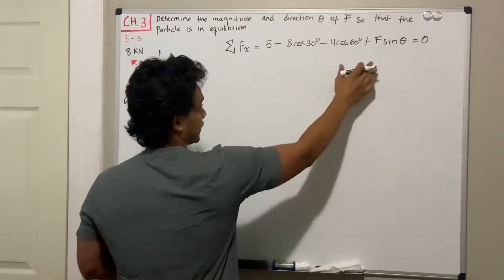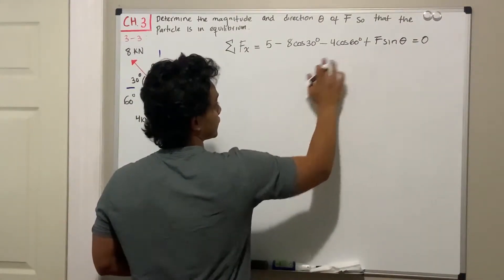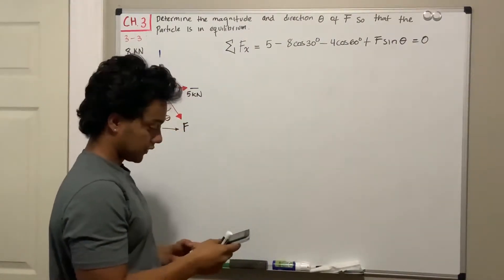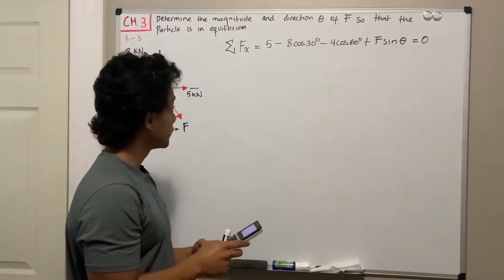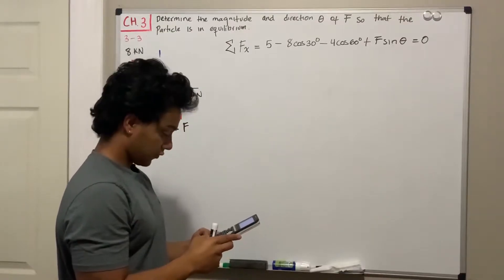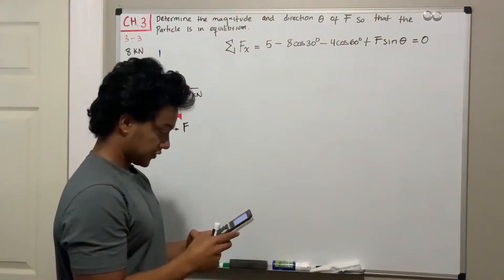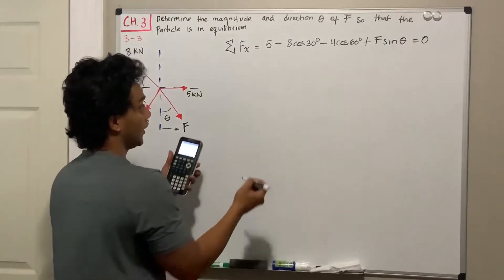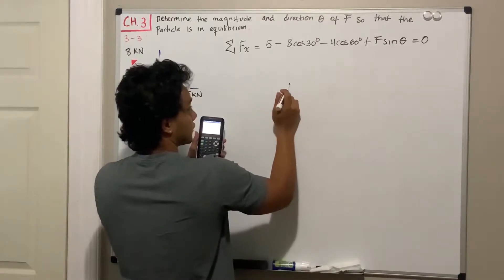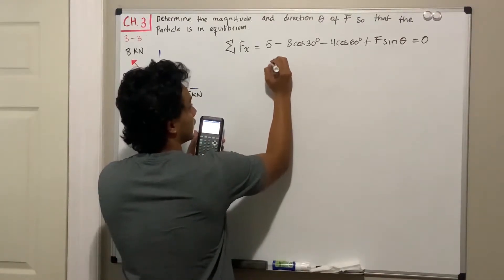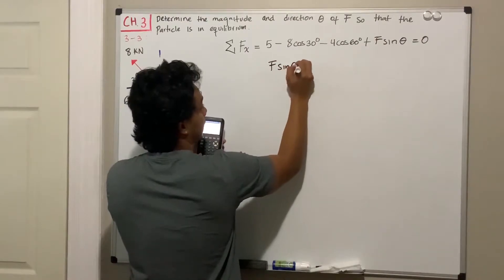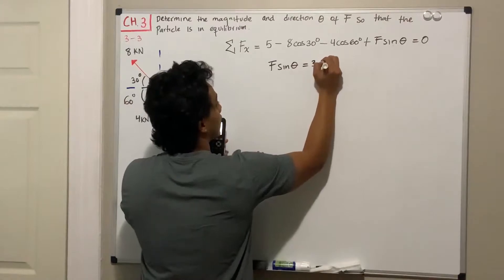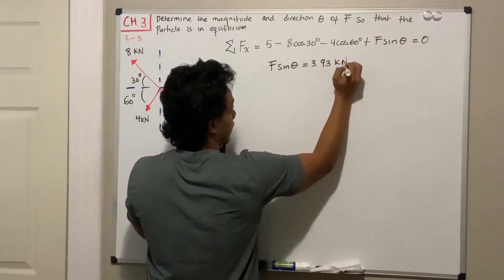Let's clean this up and compute the numbers. We have five minus eight times cosine of 30 minus four times cosine of 60. That gives a total of negative 3.93, and if we pass it to the other side it becomes positive. So F sine of theta equals 3.93 kilonewtons.